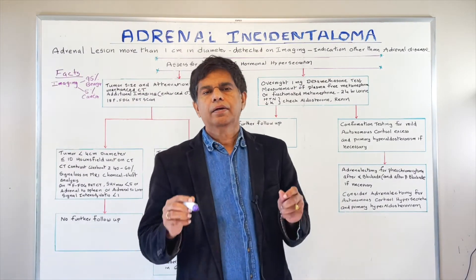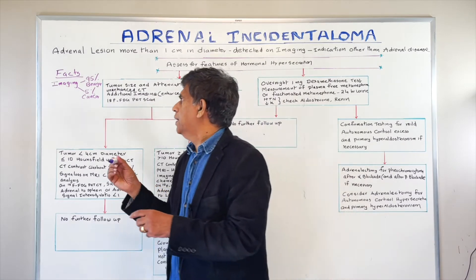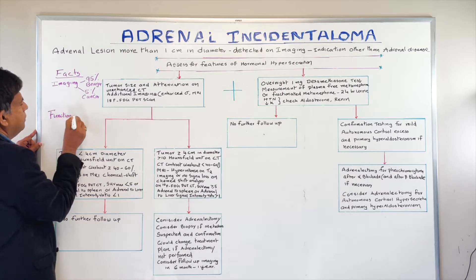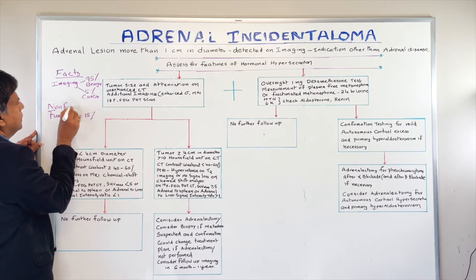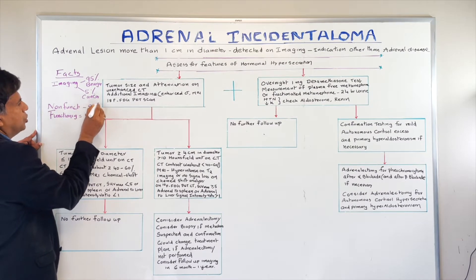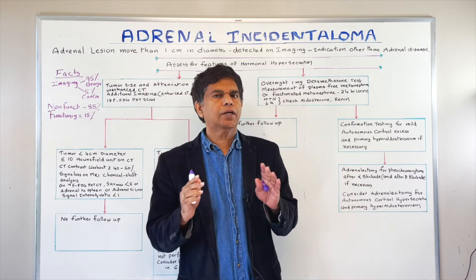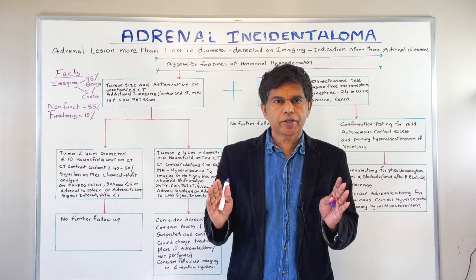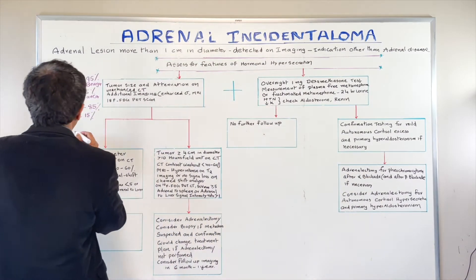The second thing you need to know: is it functioning or non-functioning? Functioning means it's producing hormones. Around 85% are non-functioning tumors and 15% are functioning tumors. Always remember that.